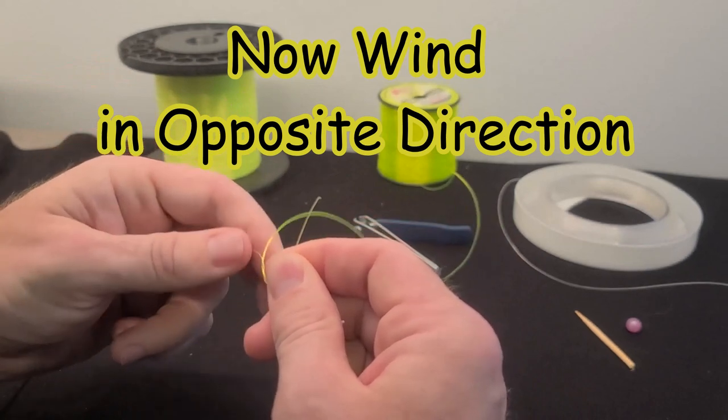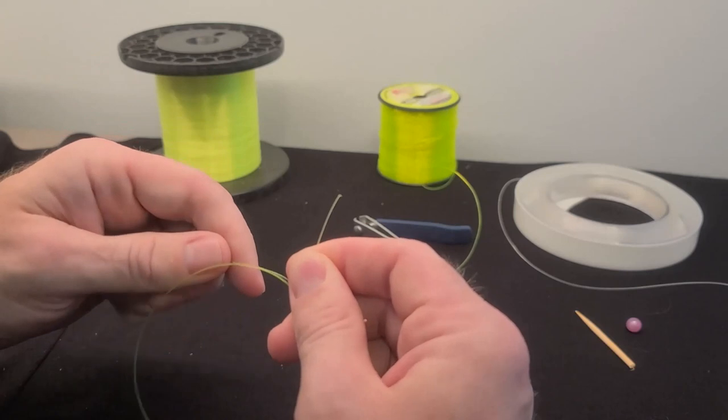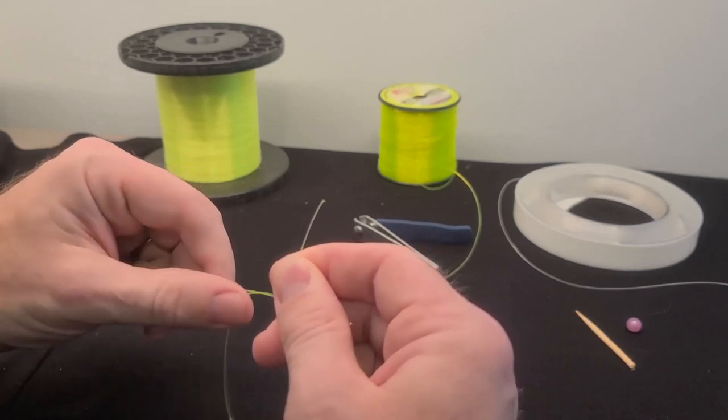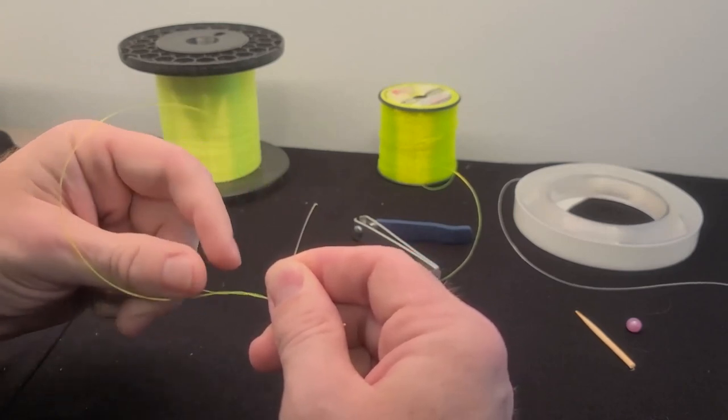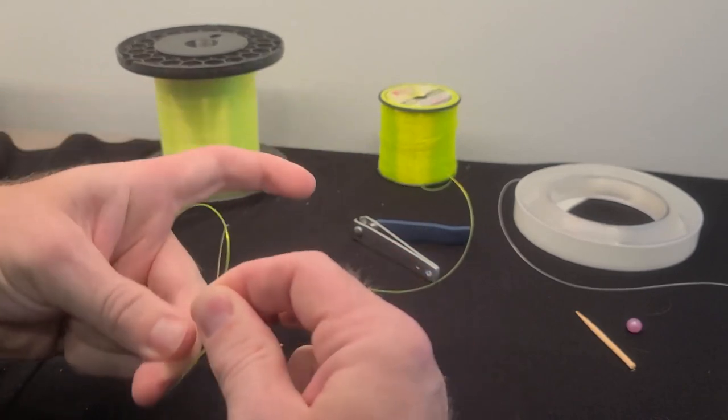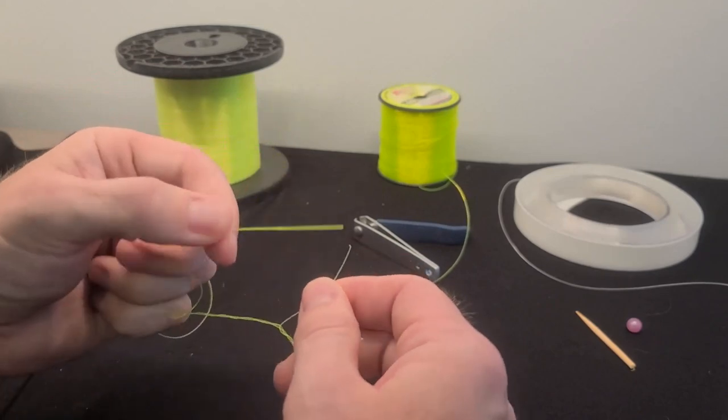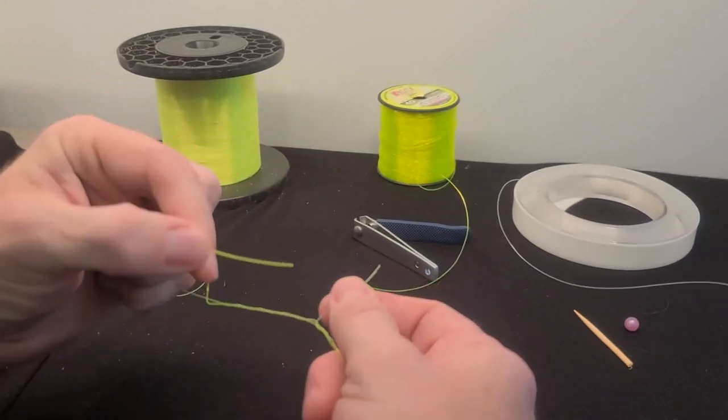So now your other side is your heavier line. Heavier line doesn't like to shrink down as good as the small line, so you're gonna only go around this one about four - we'll go five times. When you see when we're connecting it to a rig, I go even less because it really doesn't matter.